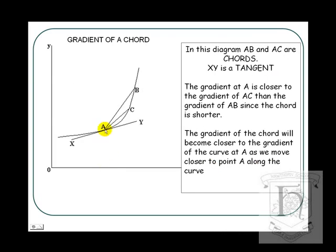In this diagram, AB is a chord, AC is a chord, and XY is a tangent. The gradient of AC is closer to the gradient of the curve at A than the gradient of AB, because the distance between A and C, horizontally, has become smaller.